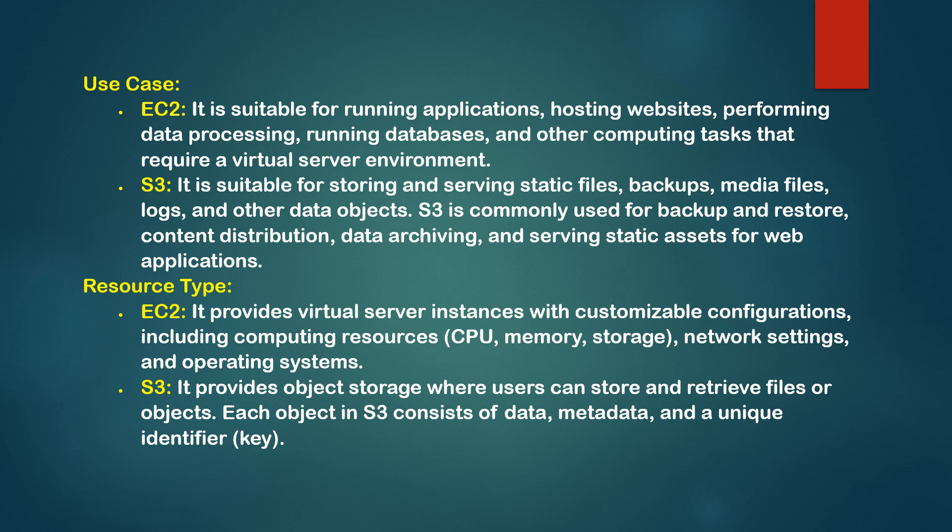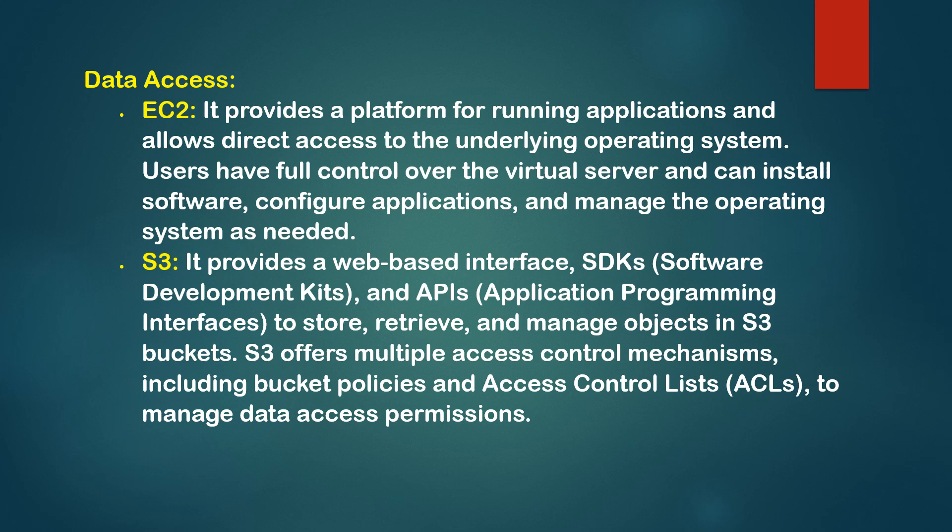Resource Type — EC2: EC2 provides virtual server instances with customizable configurations including computing resources such as CPU, memory, storage, network settings, and operating systems. S3: S3 provides object storage where users can store and retrieve files or objects. Each object in S3 consists of data, metadata, and a unique identifier.